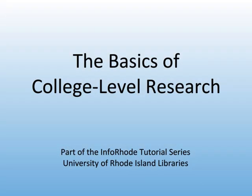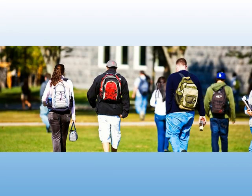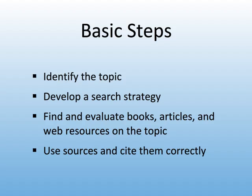The basics of college-level research: research at the college level may require more consideration and effort than before. There are several steps to college-level research, and sometimes the steps need to be repeated. If you run into any problems, remember that you can always consult a librarian for assistance. The basic steps are to identify the topic, develop a search strategy, find and evaluate books, articles, and web resources on the topic, and use sources and cite them correctly.